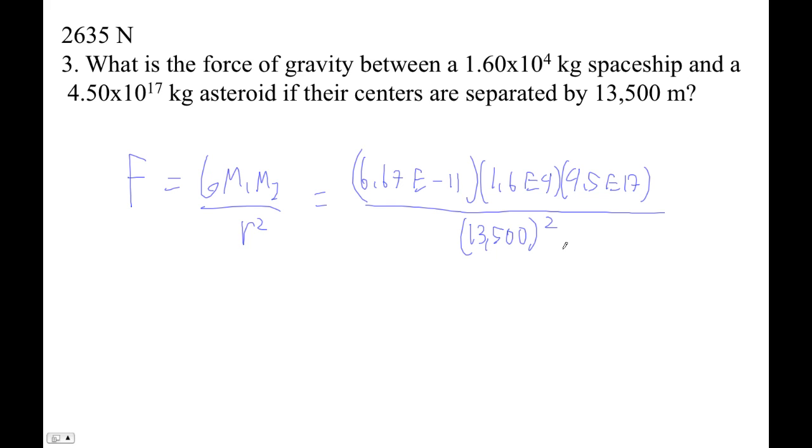It says 6.67 E minus 11 times 1.6 E to the 4 times 4.5 E to the 17th. So that button, this button I'm using there is the button that says E on it. It's the comma button. Second comma, sorry.